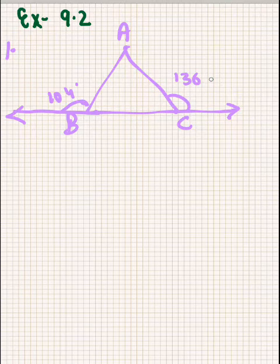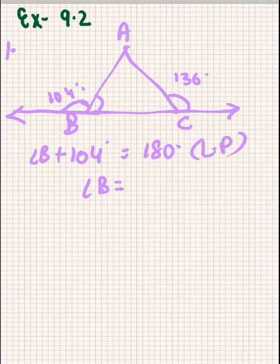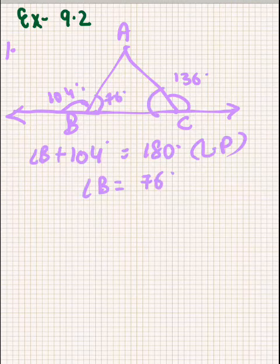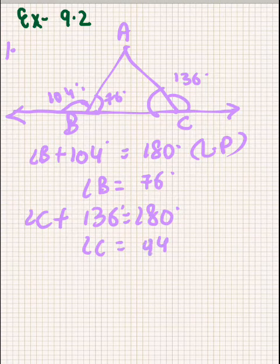So we have to find all the angles of the triangle. This angle and this angle make a linear pair, so angle B plus 104 degrees will be equal to 180 degrees because it's making a linear pair. So angle B will be equal to 76 degrees. Then this angle and this angle are making again a linear pair, so angle C will be equal to 44 degrees.